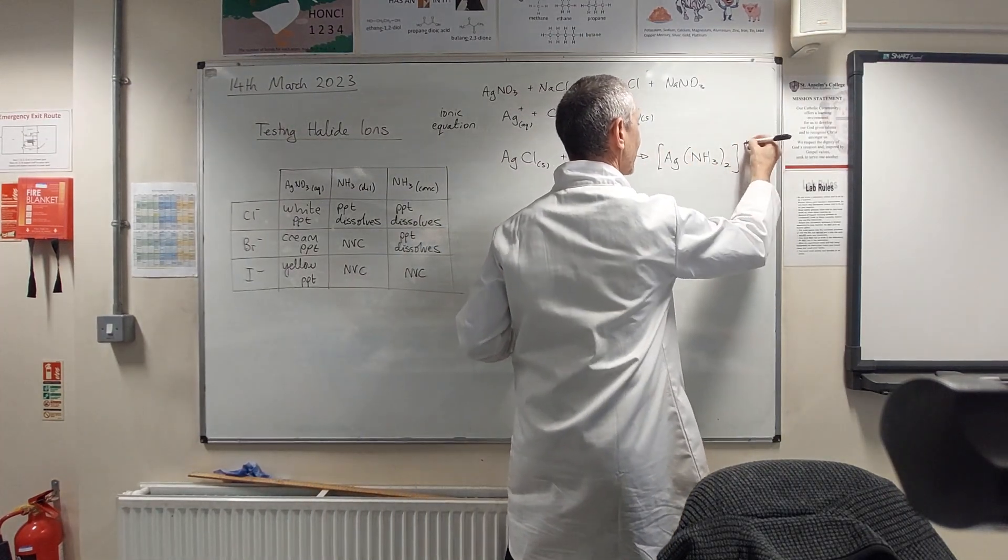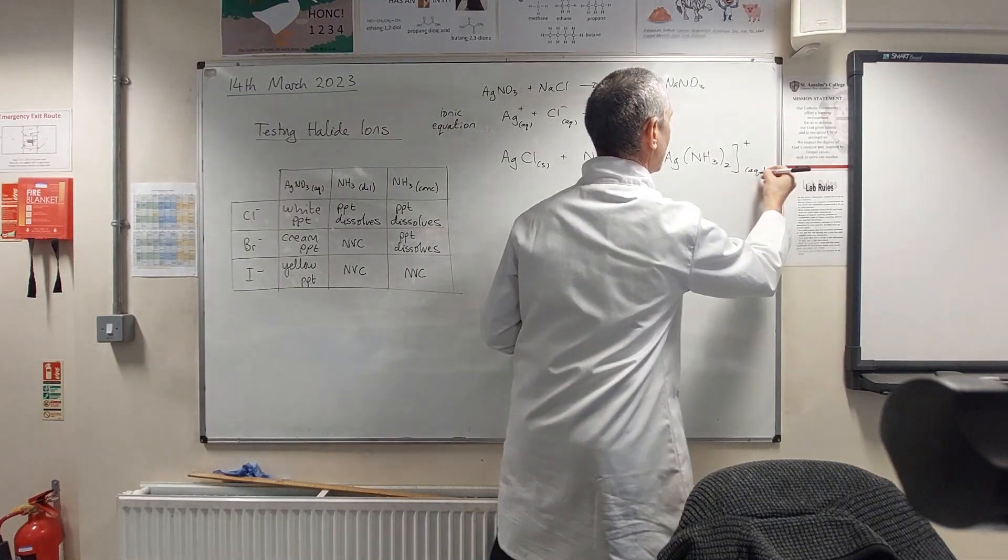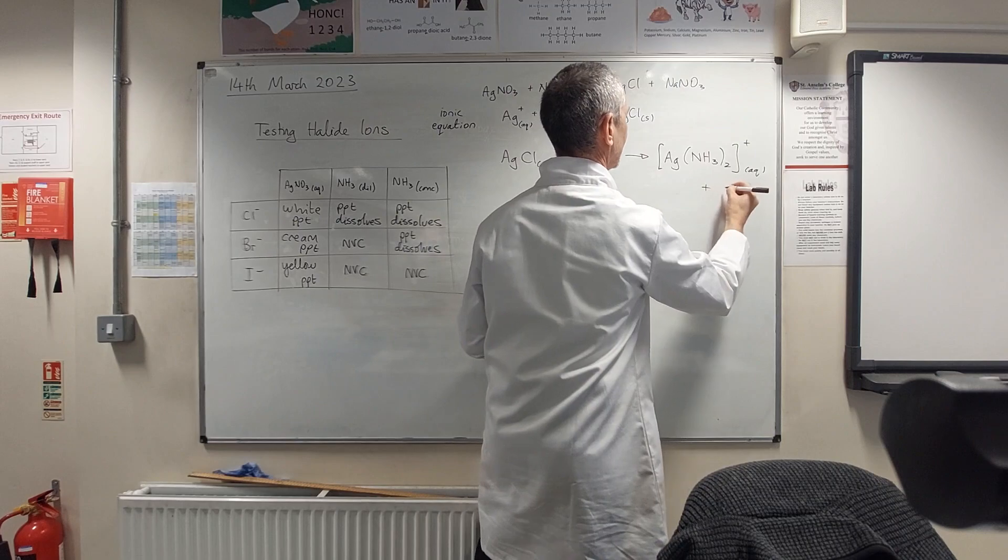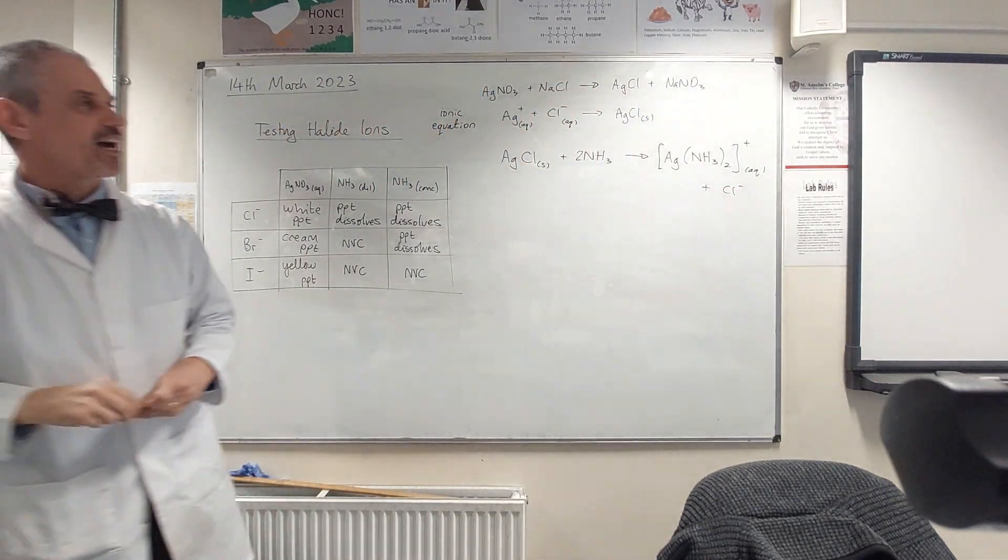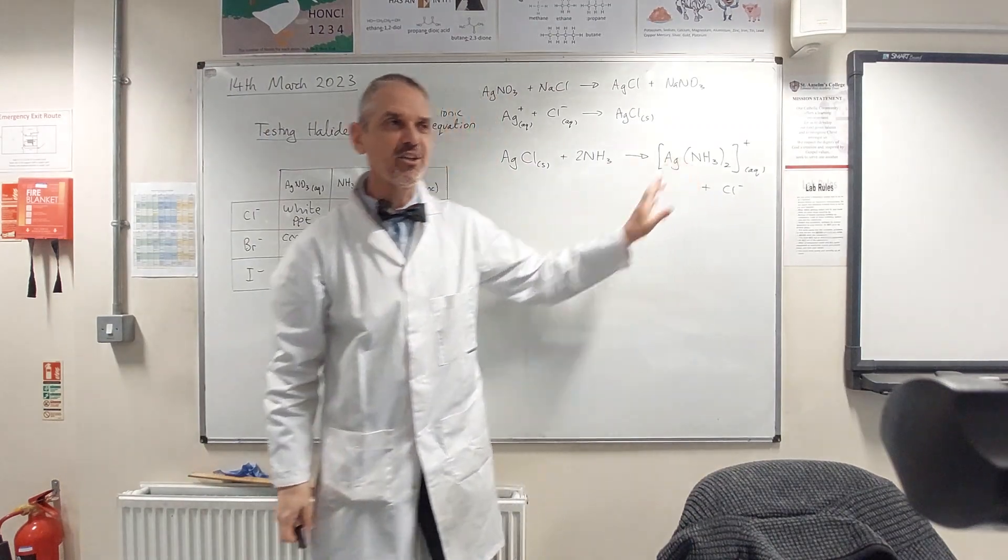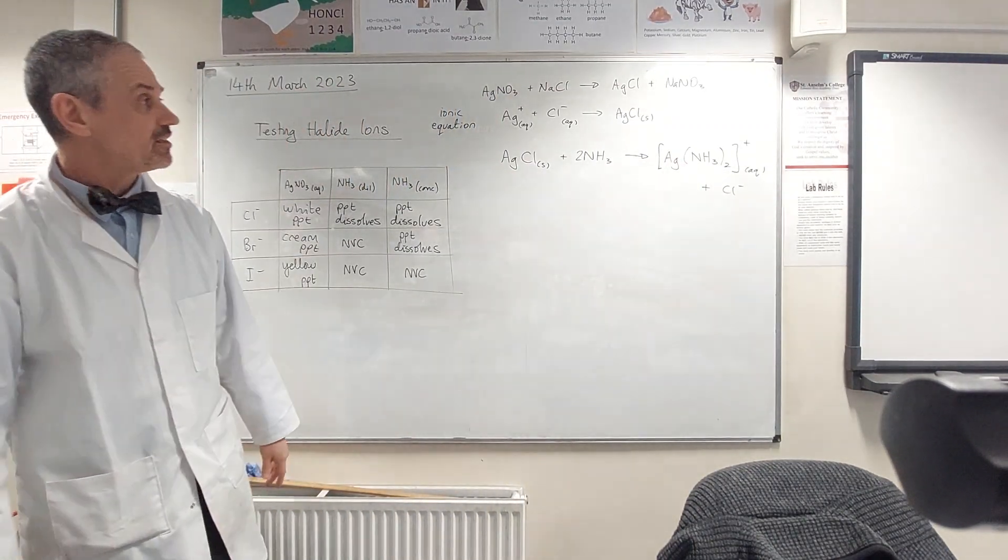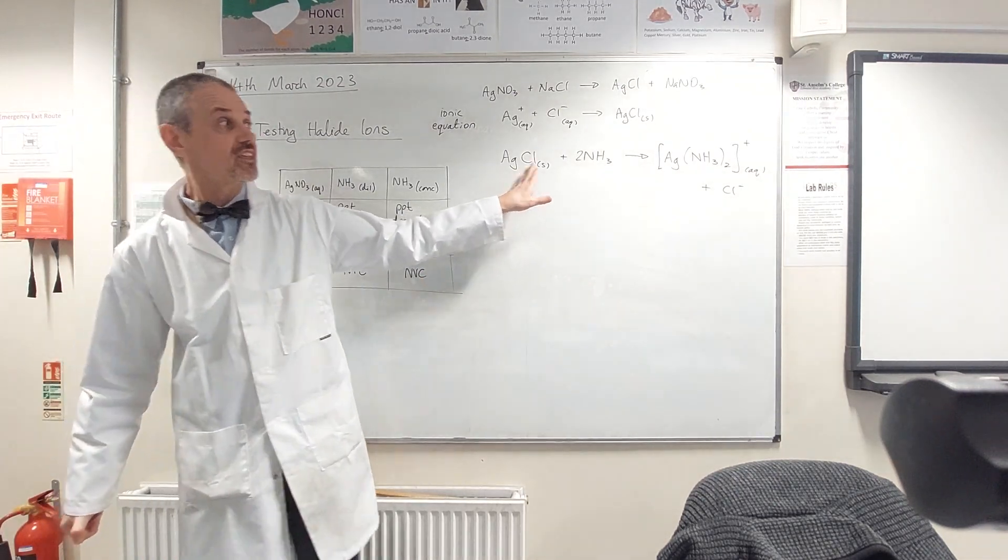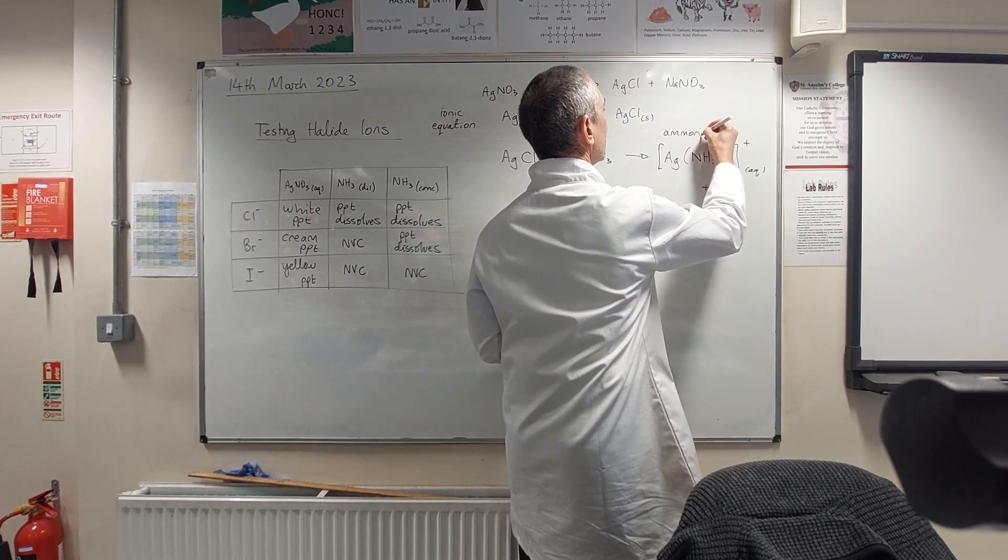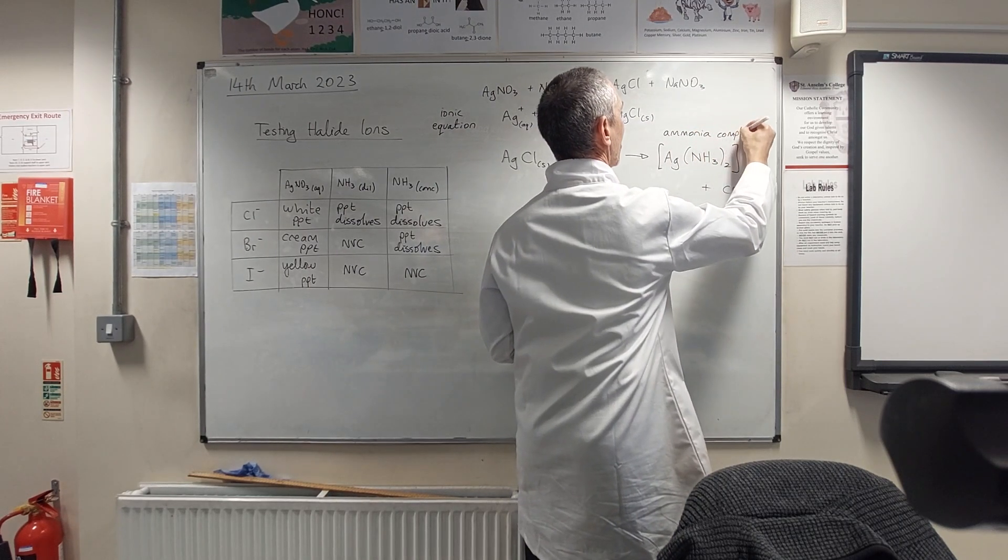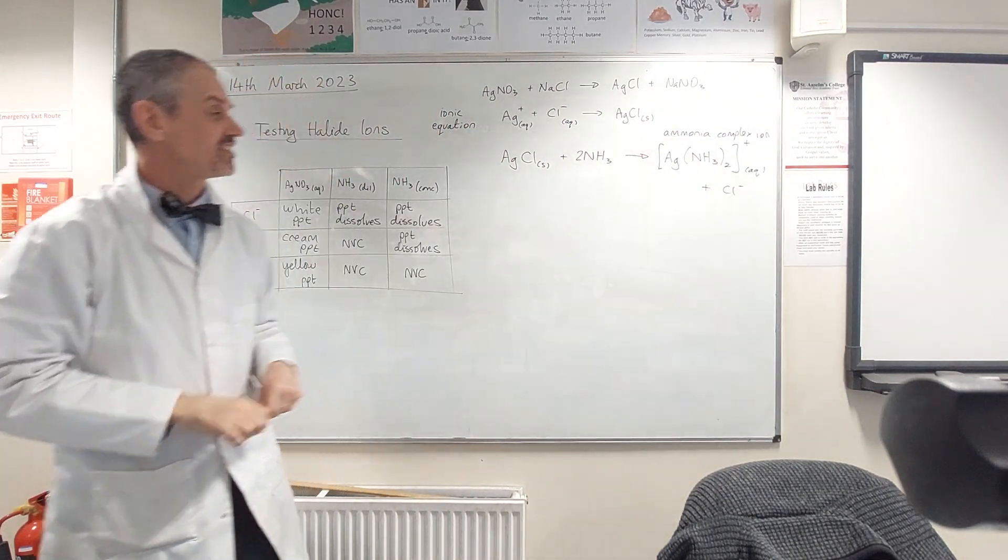And then all of that, we use these square brackets, have a plus charge there. Okay, so it's kind of an interesting reaction. Don't worry if that doesn't make a huge amount of sense, we will come back to that next year, but that's just the reaction that takes place. That's why the silver chloride dissolves. It forms that ammonia, it's called a complex ion. You will do lots on complex ions next year.